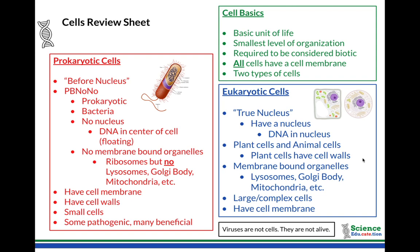These are larger, more complex cells, and of course they have a cell membrane because every single cell has a cell membrane. Even cells that have cell walls have cell membranes. Animal cells only have a cell membrane — animal cells do not have cell walls. Plant cells do have cell walls, made of cellulose, which is different from prokaryotes. Some fungi also have cell walls made of chitin.